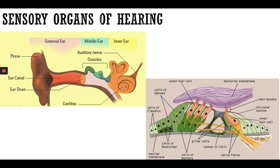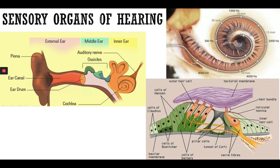The inner ear is made of the cochlea, which is a snail-like organ. The cochlea is full of fluid. This fluid receives the sound vibrations, converts them into electrical signals, and sends them to the central nervous system.